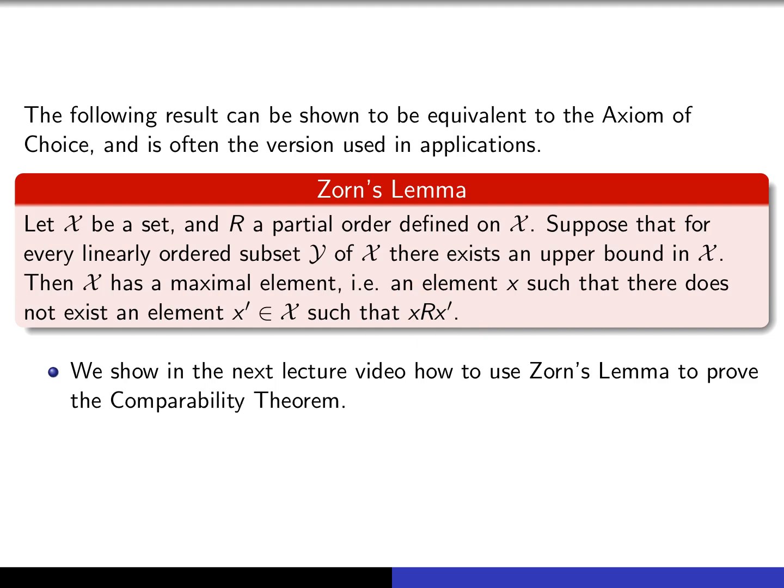And it's also the case that the proof that I'm going to show you is a fairly typical use of Zorn's Lemma. It's exactly the way Zorn's Lemma is used to prove, for example, that every vector space has a basis and that every ring has a maximal ideal.